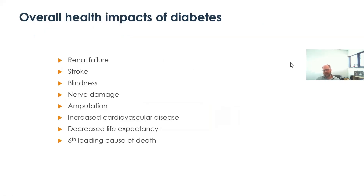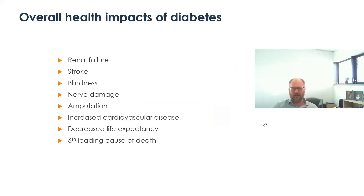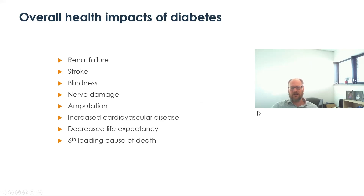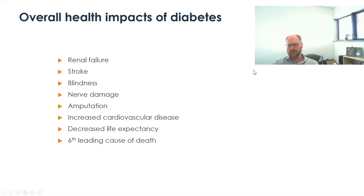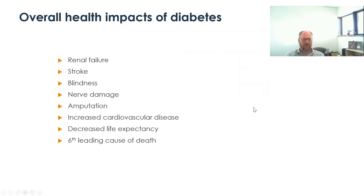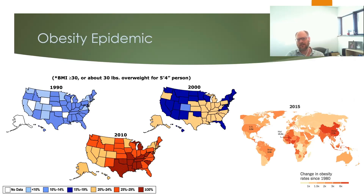All of these effects add up to significant health impacts. Over time, unmanaged diabetes results in renal failure, stroke, blindness, and nerve damage — it is one of the leading causes of amputation. It is a major contributor to heart disease, reduces life expectancy, and is one of the six leading causes of death. The death rate is increasing significantly over the past several decades, largely due to obesity, which is the primary risk factor for diabetes and has increased dramatically over the last half century.